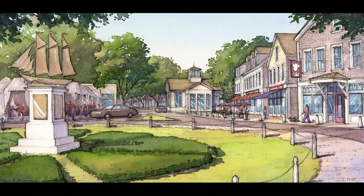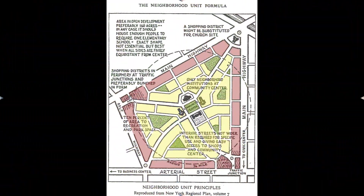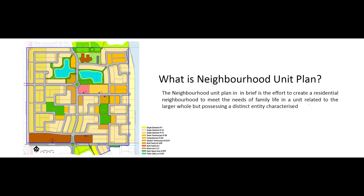We will now discuss neighborhood unit principles. Size: A residential unit development should provide housing for the population for which one elementary school is ordinarily required, its actual area depending upon population density. Boundaries: The unit should be bounded on all sides by arterial streets, sufficiently wide to facilitate its bypassing by all through traffic. Open Spaces: A system of small parks and recreational spaces should be provided, planned to meet the needs of the particular neighborhood. Institutional Sites: Sites for the school and other institutions should be suitably grouped about a central point or common area.